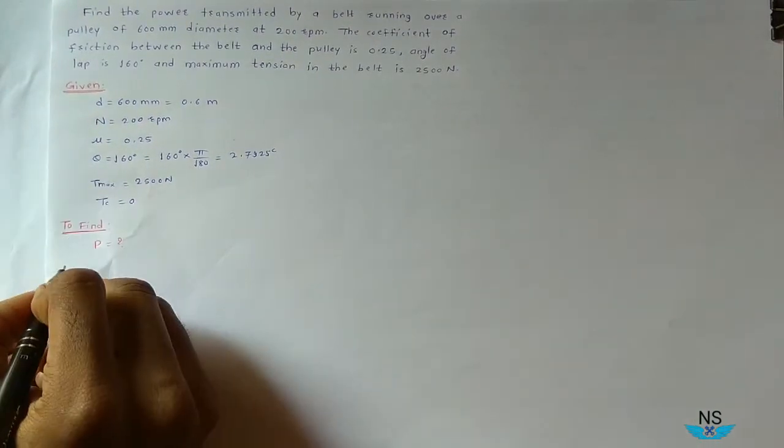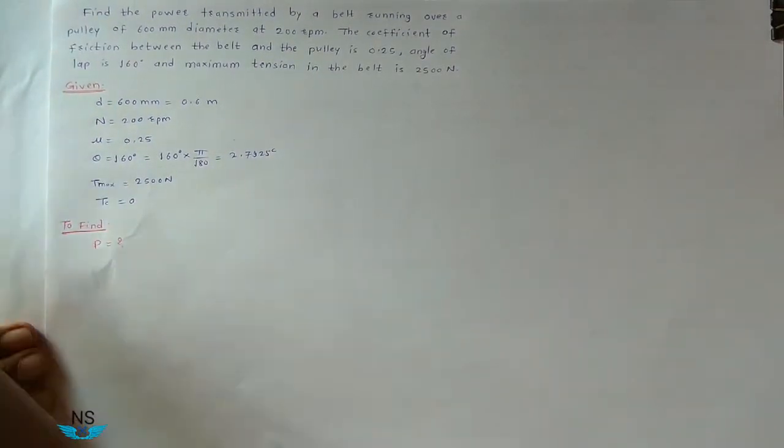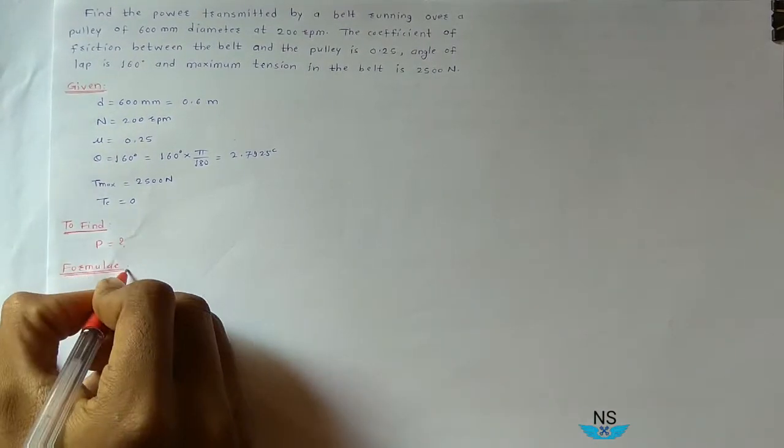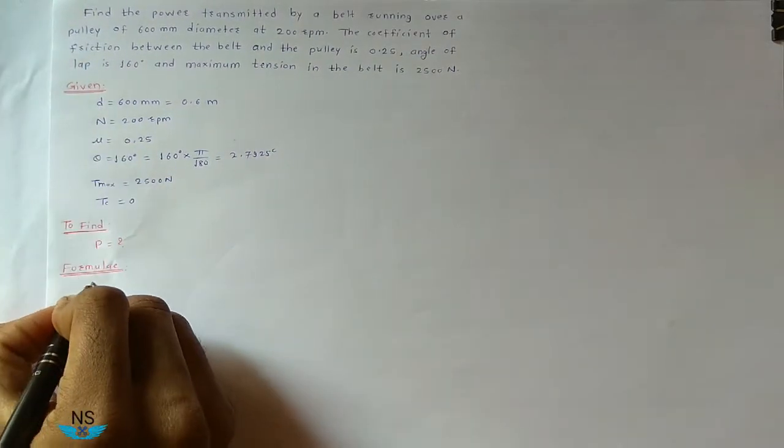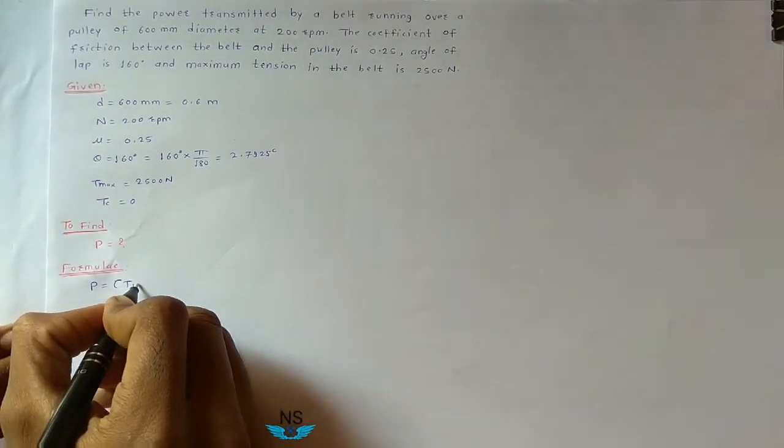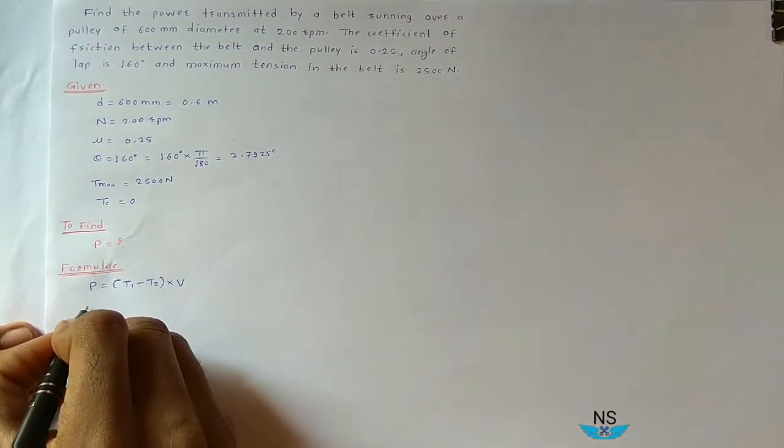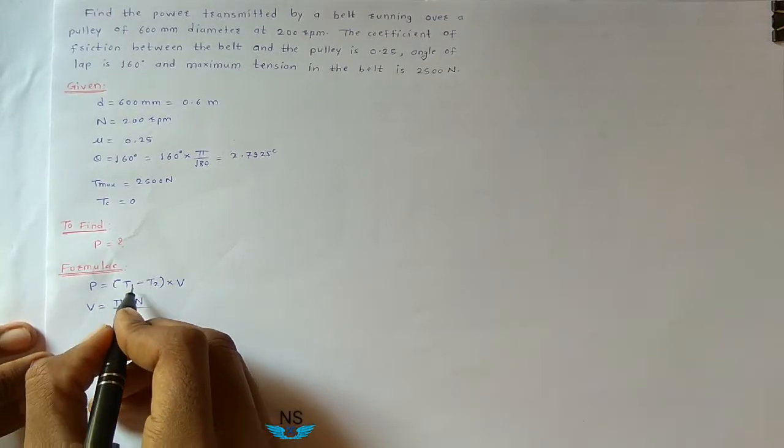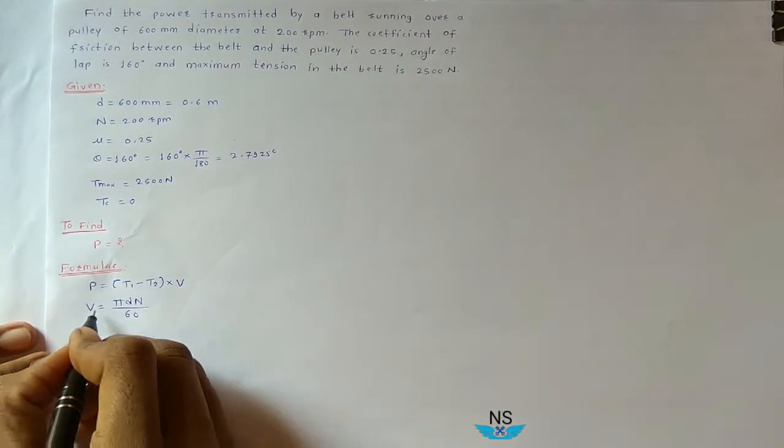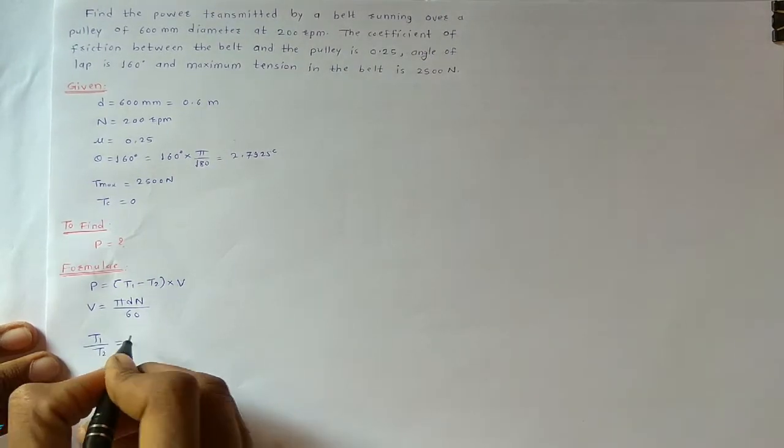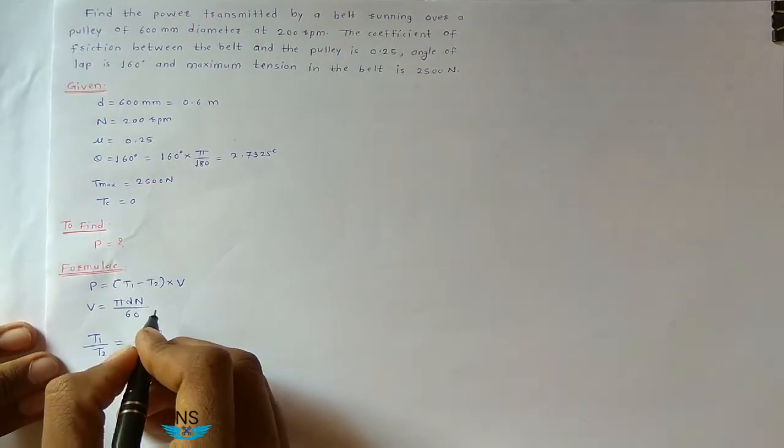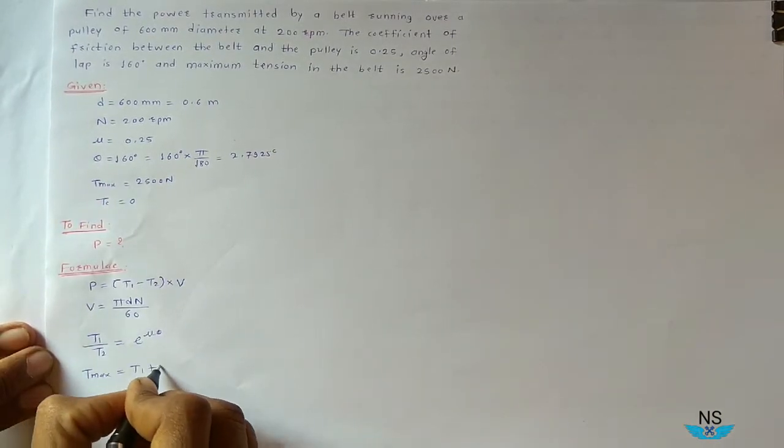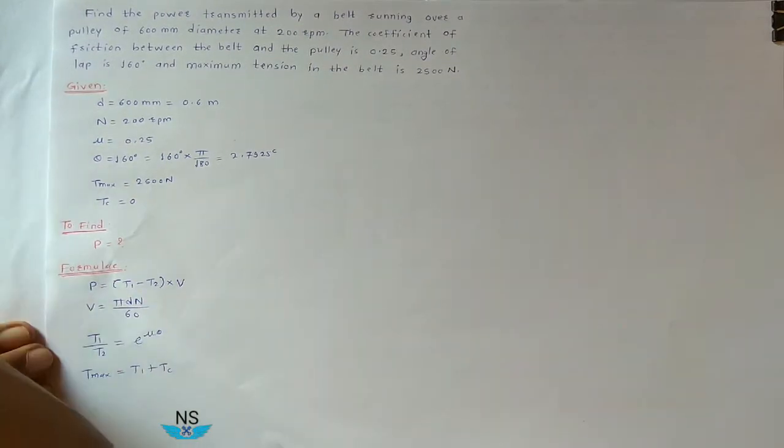Formula: Power P is equal to T1 minus T2 into V. And V is equal to pi dn divided by 60. T1, T2 you find from tension ratio: T1 divided by T2 is equal to e raised to mu theta. And T1 you get from Tmax: Tmax is equal to T1 plus Tc, where Tc is 0.